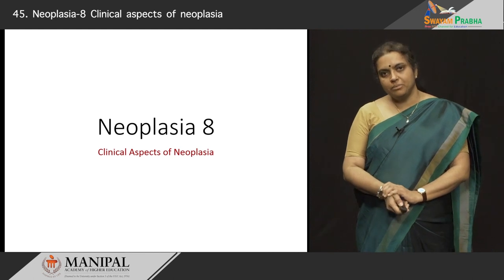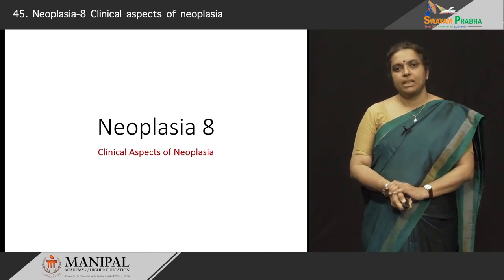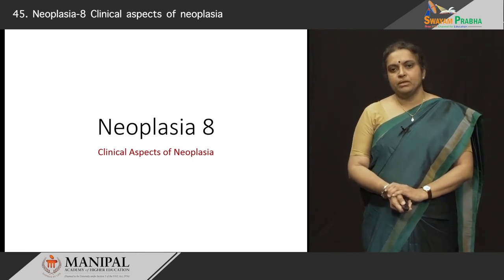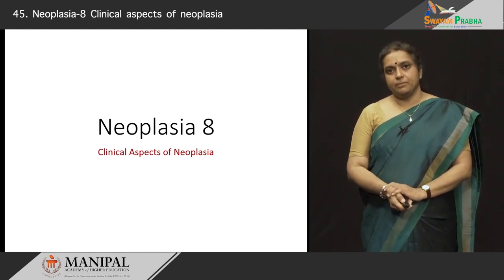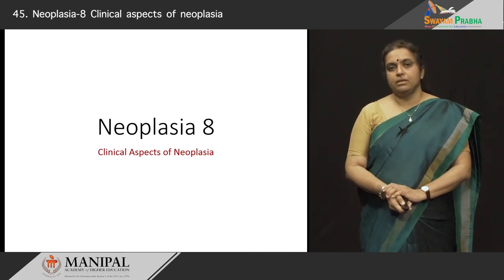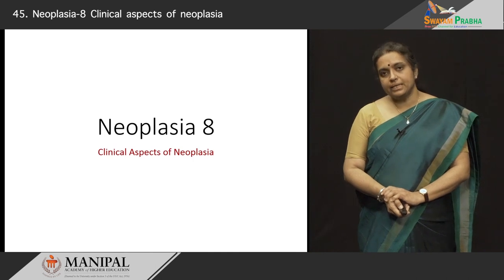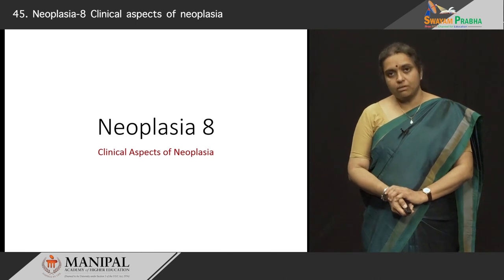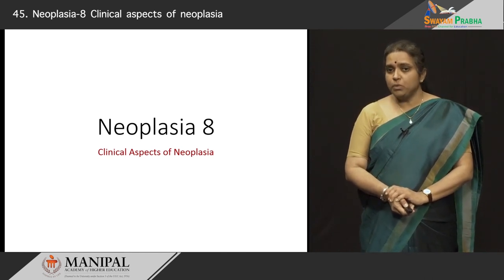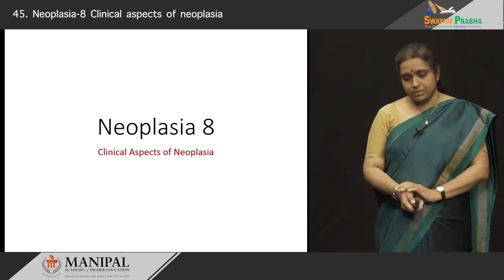Hello, everyone. Today we will talk about clinical aspects of neoplasia. This is the last session in this series of neoplasia. Till now, we have studied what is cancer — cancer is a genetic disease — the various hallmarks of cancer, stimulation of growth signals, inhibition of growth suppression because of tumor suppressor gene inactivation. We have studied invasion and metastasis, angiogenesis, immunity or immune surveillance in cancer, carcinogenesis, viral carcinogenesis, and chemical carcinogenesis. Today we will try to put it all together and see what really happens to the patient who has cancer. This session is about the clinical aspects of neoplasia.